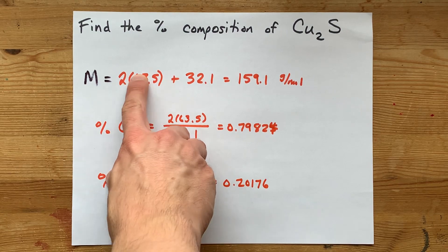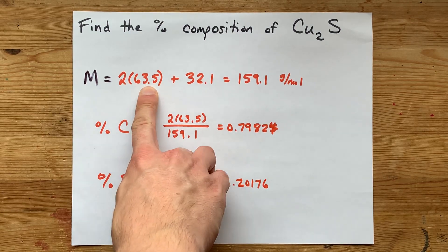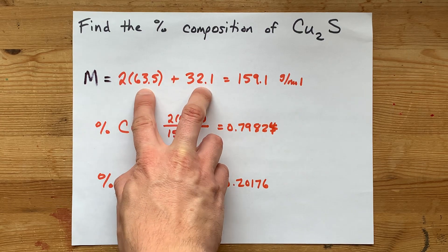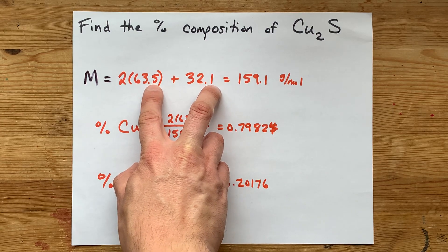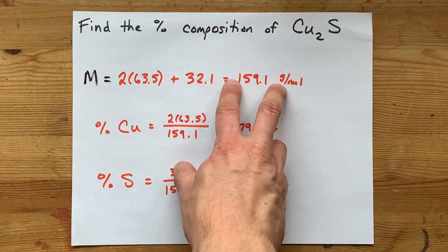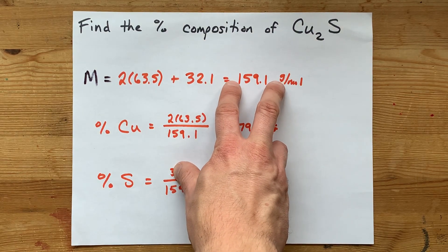Now, my periodic table only had three significant digits for copper and three for sulfur. When you add numbers together though, you carry forward the number of decimal places. So this number actually does have four significant digits.